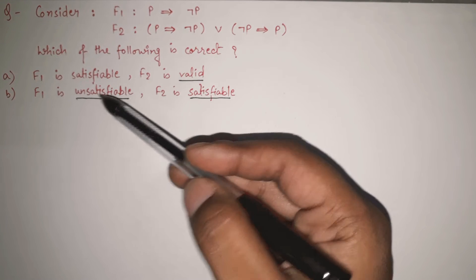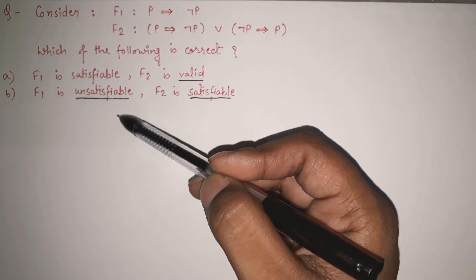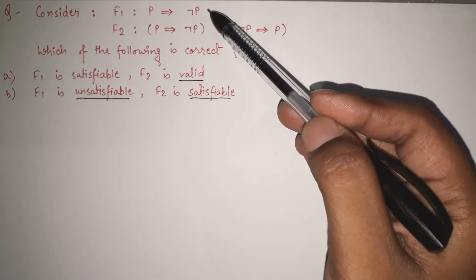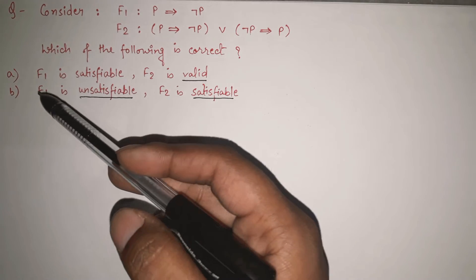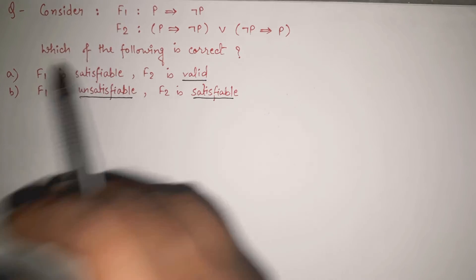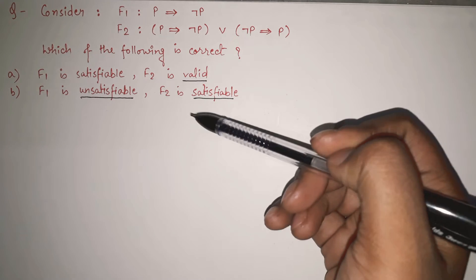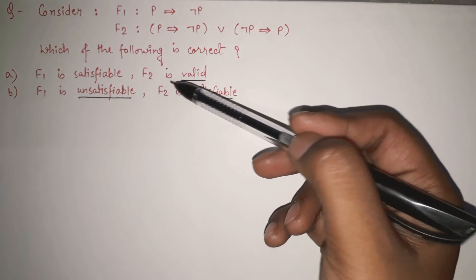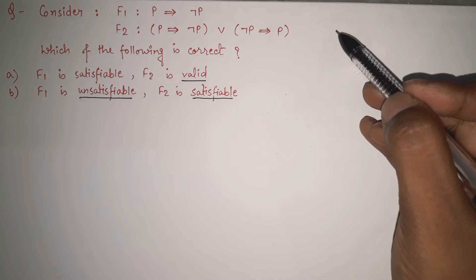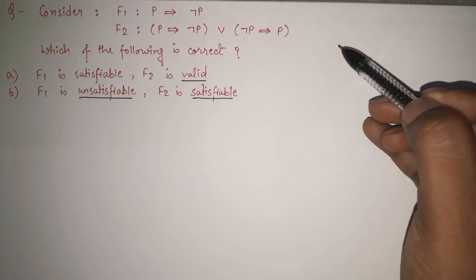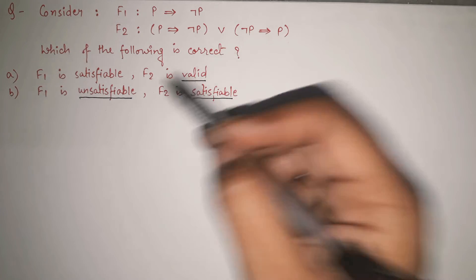What is unsatisfiable? We can say that F1 is unsatisfiable if there exists no such value such that F1 can possibly be correct. If there is no such possibility of F1 being correct, then it is unsatisfiable — it cannot be satisfied in any condition. The last one is valid. We can say F2 is valid if it is always true. So three different things: if it is always true, it is valid; if it can be true, it is satisfiable; if it can never be true, it is unsatisfiable.